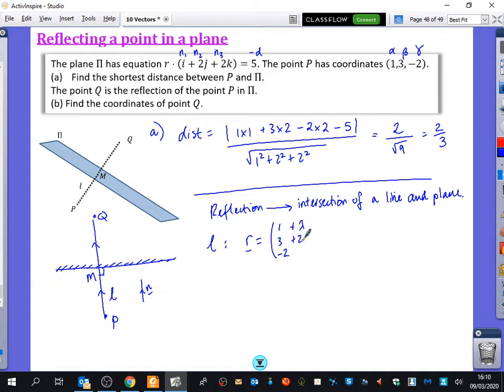So it's 1, 2, 2. So this is my equation of the line. And we know already, I'm just going to copy it out though, the equation of the plane is R dot 1, 2, 2 equals 5.